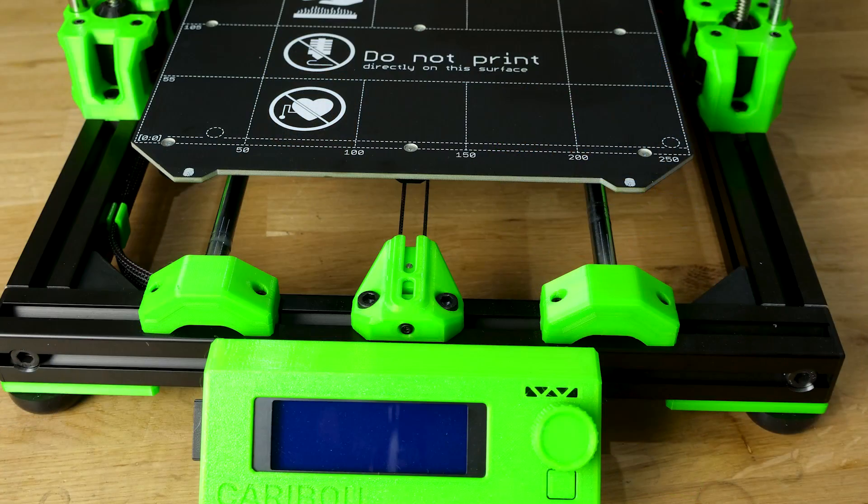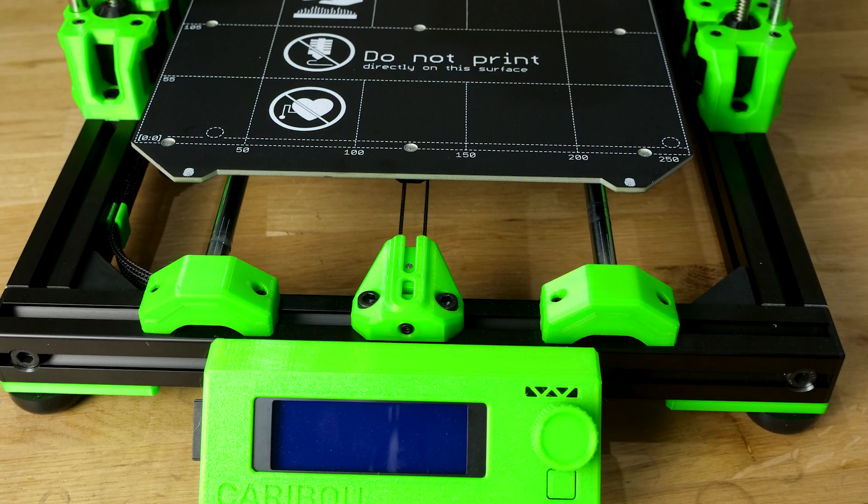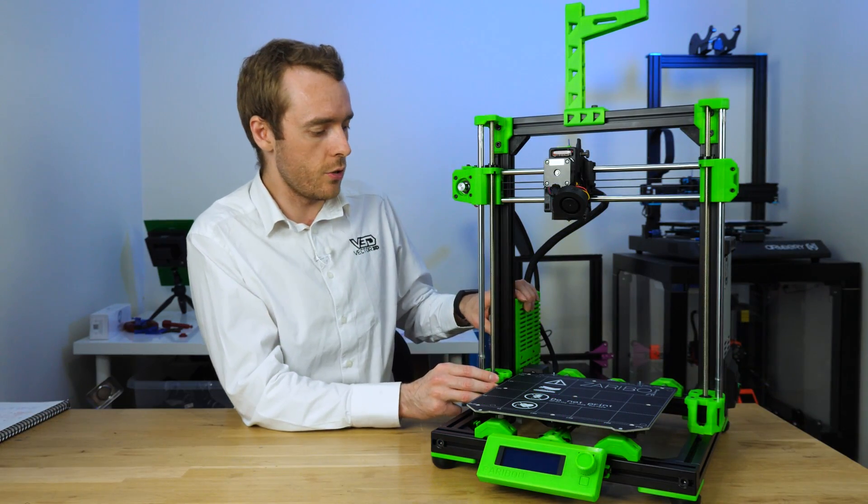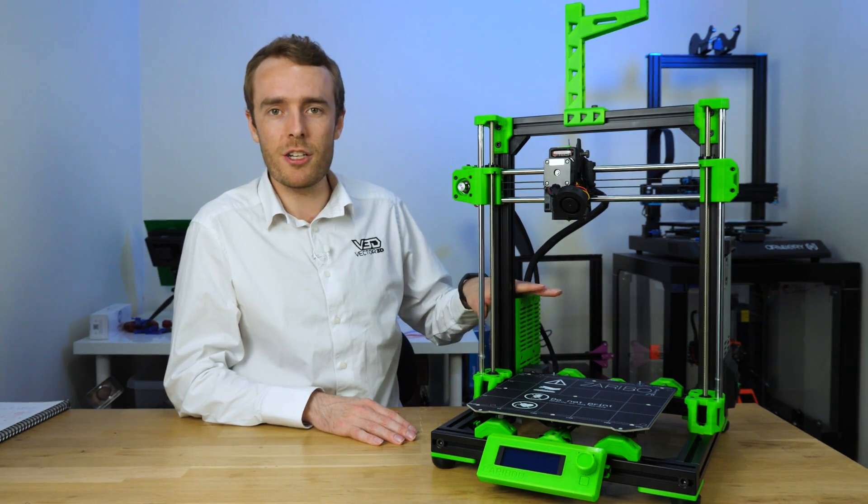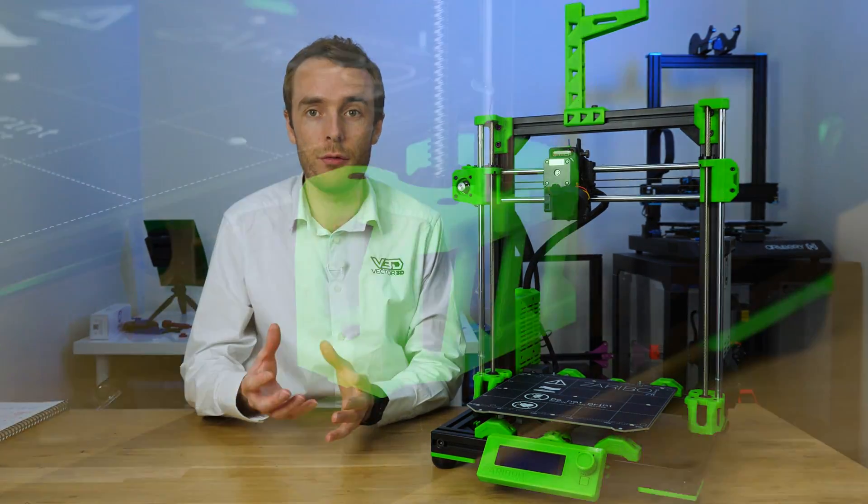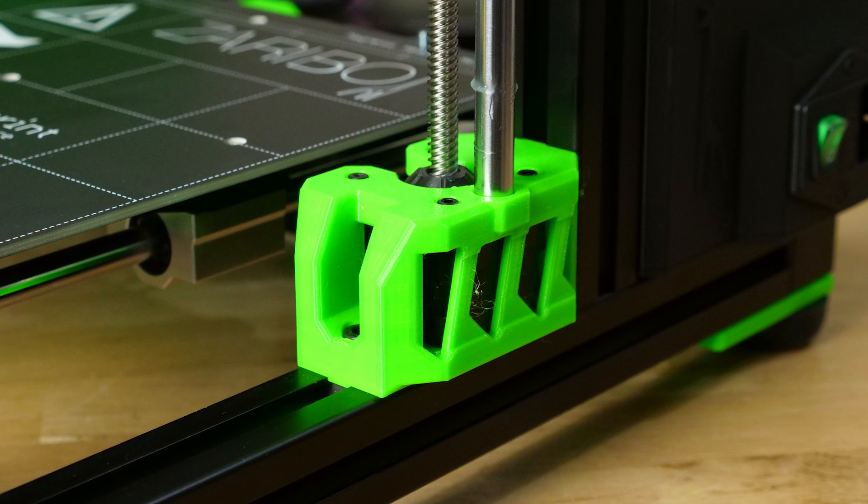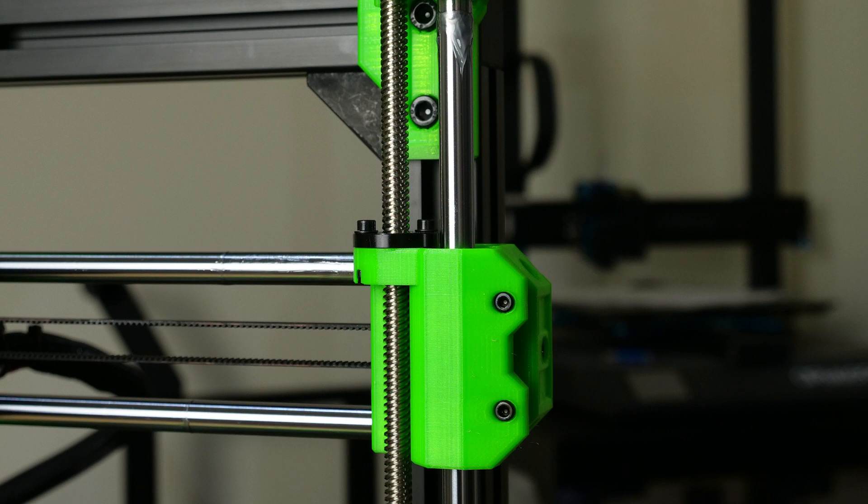Firstly the entire frame is made of 30 by 30 millimeter aluminium extrusion. Next we have all these printed parts in this bright luminous green, it looks quite nice I think, and they are printed much thicker, more densely and therefore stronger and more rigid than the original Prusa parts. They are much heavier, it's over a kilogram of filament that goes into printing all of the parts for one printer.